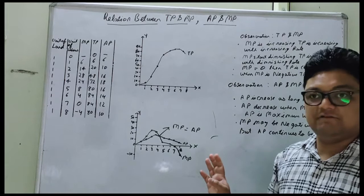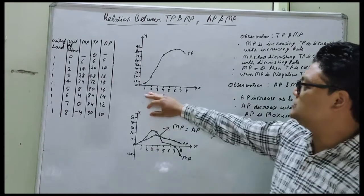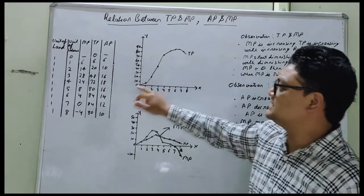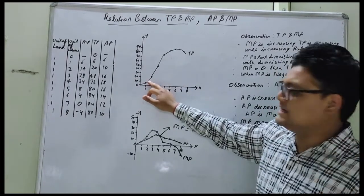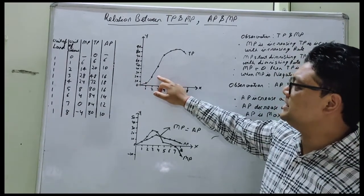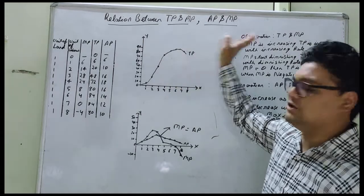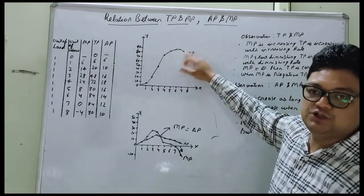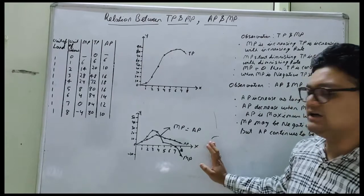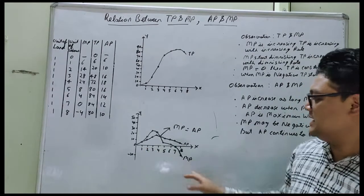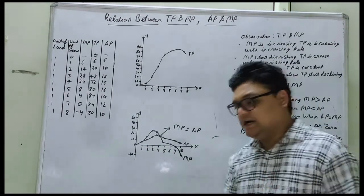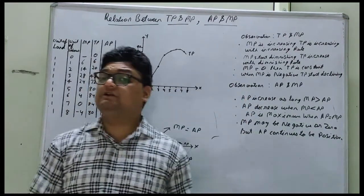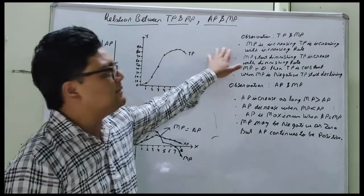First you have to make the total product graph, and second you have to make the marginal product graph. As you know, total product starts at 6 on the first unit; make a point at 6, then at 20, then 48, then 72, and so on. This gives the position of total product. Afterwards you have to plot marginal product and average product on the same graph. Now let's talk about the relationship between total product and marginal product.